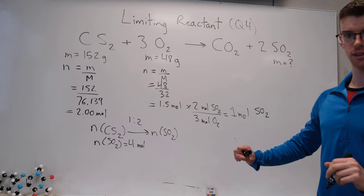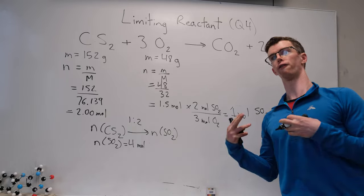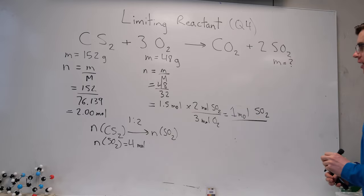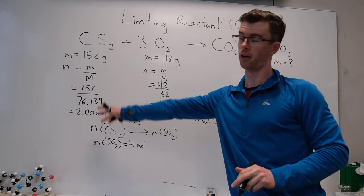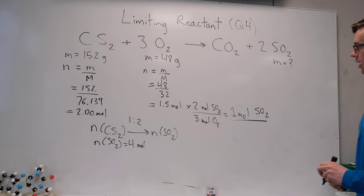So this tells us that oxygen is the limiting reagent. It's the thing we're going to run out of first. We can only form 1 mole of sulfur dioxide, even if we had unlimited amount of carbon disulfide. This thing runs out first. So in this scenario, we can only form 1 mole of sulfur dioxide.